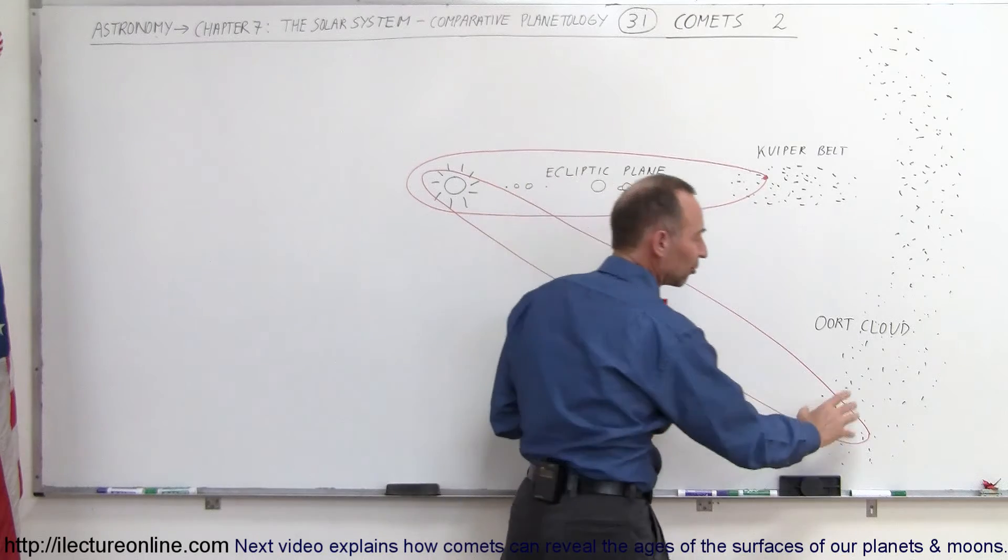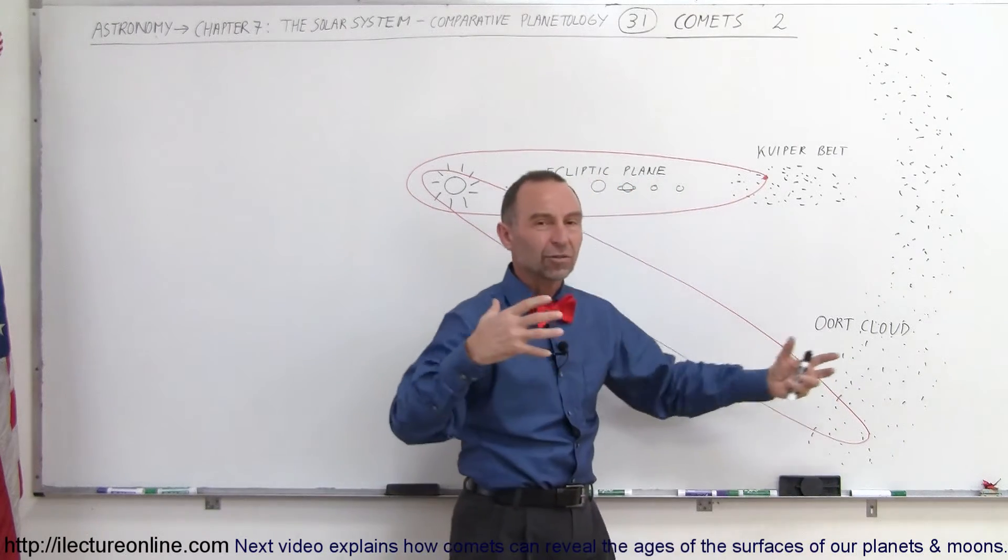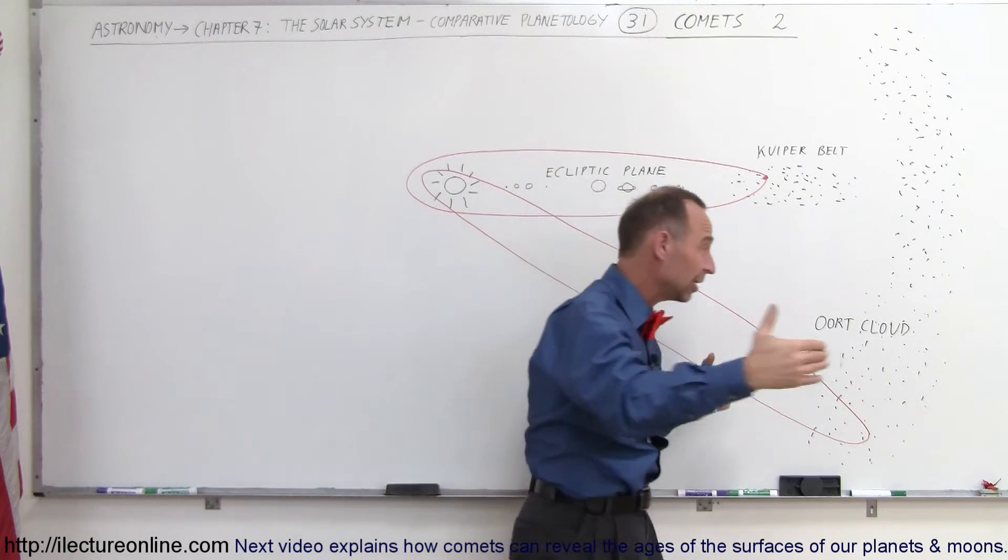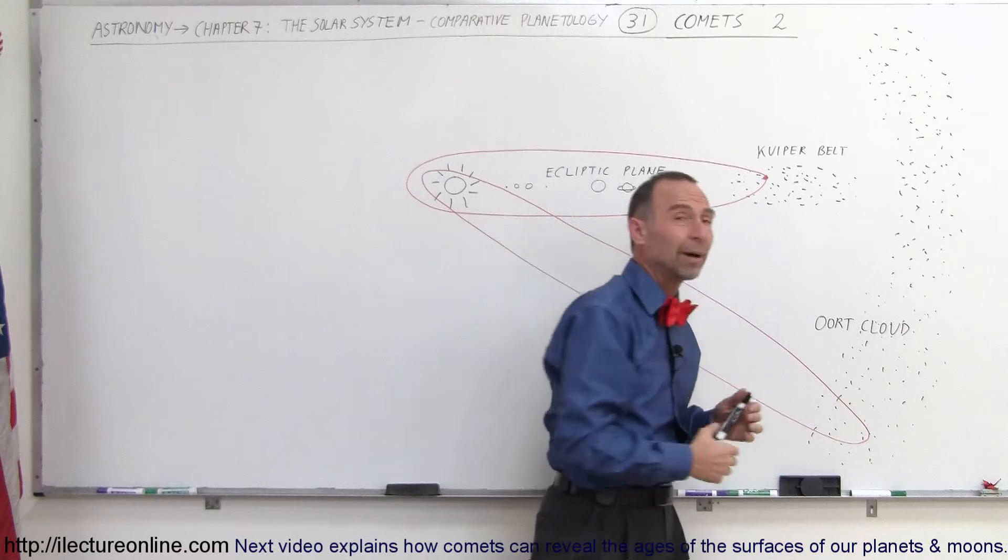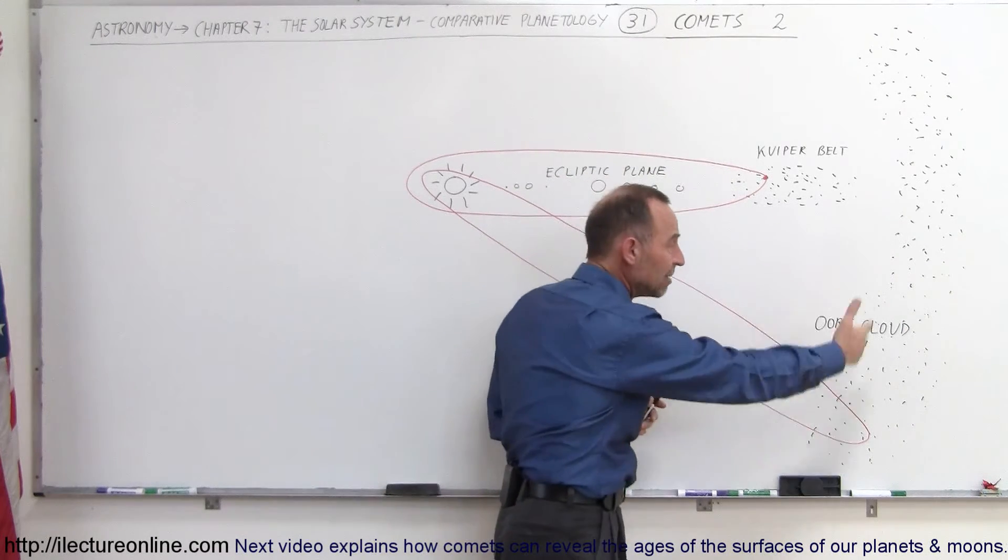And we also sometimes get visitors from that region because that region is so far out, and because the stars move relative to each other, once in a while a star will come fairly close to the Oort cloud as it passes by our Solar System and will gravitationally cause upheaval in that region.